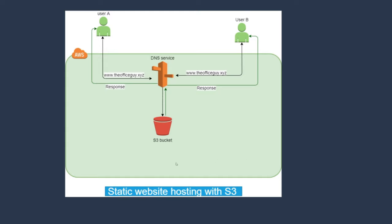So this is what we've done so far. In our AWS cloud, a user enters www.theofficeguy.xyz in their browser. It goes to the DNS service — Route 53 or Cloudflare in our case — which resolves the endpoint. Public anonymous access is granted through the bucket policy, the file is accessed from the S3 bucket, and the response is returned to the user. We are halfway there.